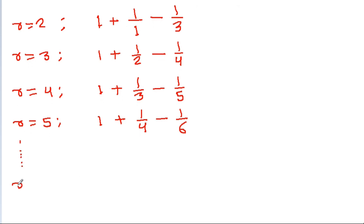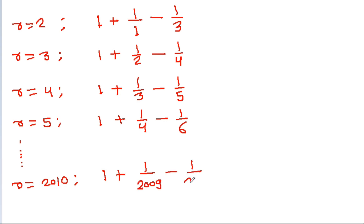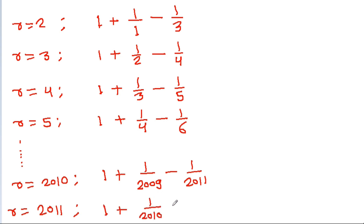When r=2010, it equals 1 plus 1/2009 minus 1/2011. When r=2011, it equals 1 plus 1/2010 minus 1/2012.